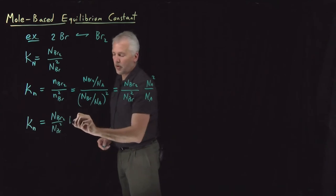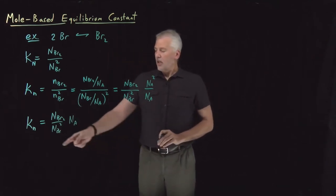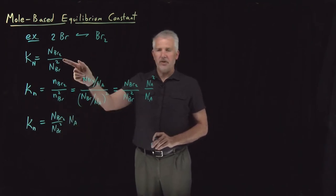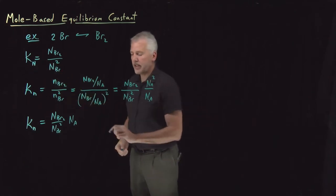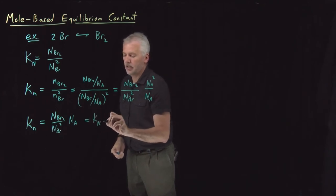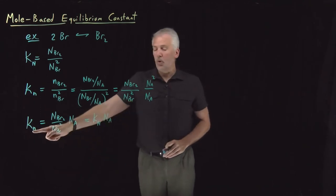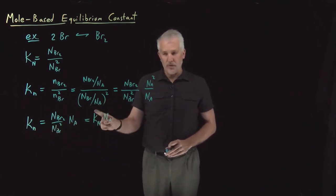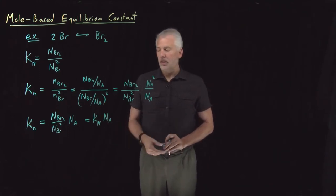That simplifies, and I can say that this mole-based equilibrium constant is molecules of Br2 over molecules of Br squared, and then I'm left with just one factor of Avogadro's number. Notice that molecules of Br2 over molecules of Br squared is exactly the original equilibrium constant — the molecule-denominated equilibrium constant, K sub big N. So I can write the mole-based equilibrium constant as the molecule-based equilibrium constant multiplied by Avogadro's number.